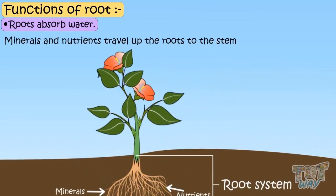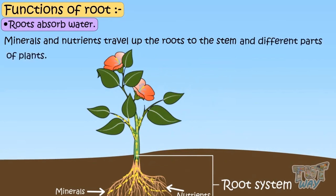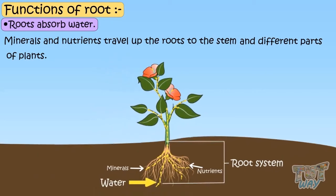Minerals and nutrients travel up the roots to the stem, and to different parts of the plant to provide nutrition to all parts of the plant.